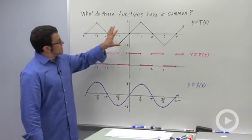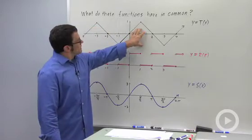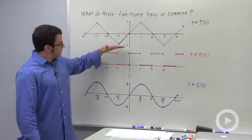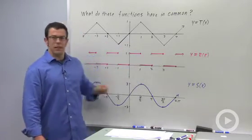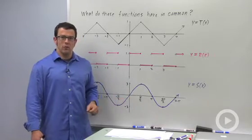They repeat themselves periodically. This triangular shape repeats itself in the graph of y equals T(x). This alternating interval pattern repeats itself in y equals R(x), and this wave pattern repeats itself in y equals S(x).